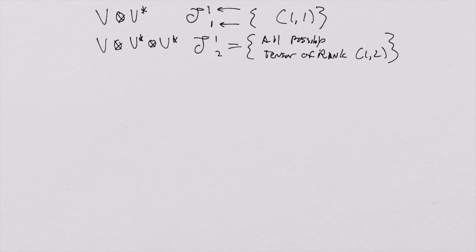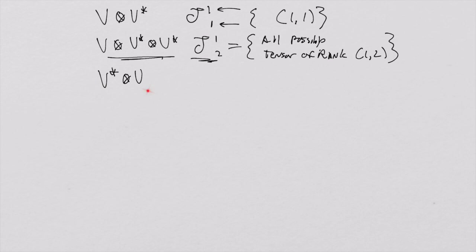If we wanted to write down the set of all possible tensors of a mixed type where a covector comes first — which is technically not a tensor by the strict definition, though it is a fully understandable multilinear product — we wouldn't use the T notation. We'd have to come up with something else or just leave it as is.